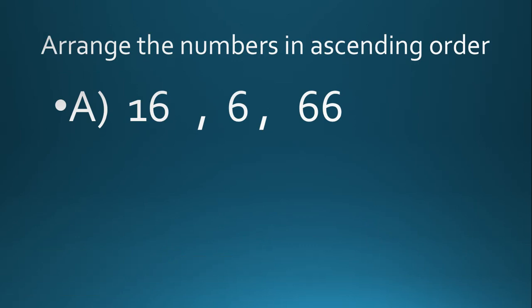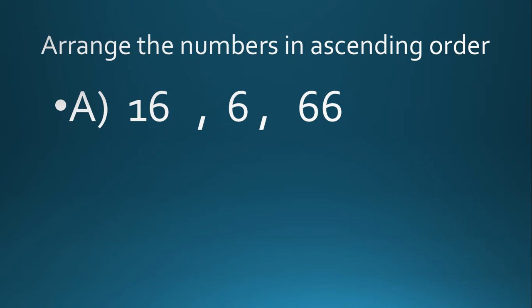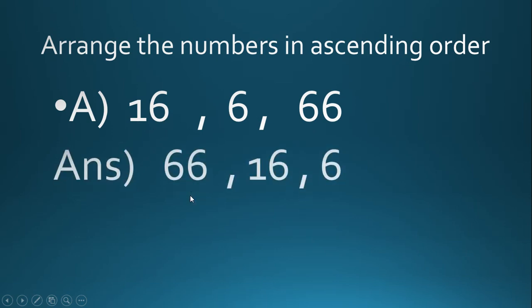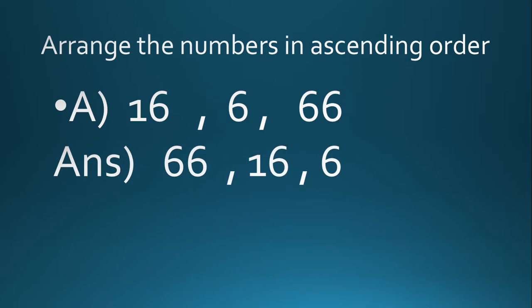Let's move to the third question: arrange 16, 6, and 66. According to the first rule, 6 is a one-digit number and one-digit numbers are always smaller than two-digit numbers, so 6 is the smallest. Then we have 16 and 66 — they are two-digit numbers and bigger than 6. Check the tens place: six is there for 66 and one is there for 16. Six is bigger than one, so 66 is the biggest. Sixty-six is the biggest, sixteen is smaller than sixty-six, and six is the smallest.